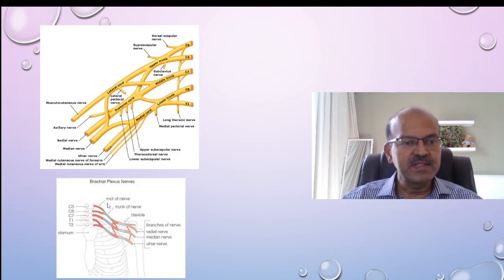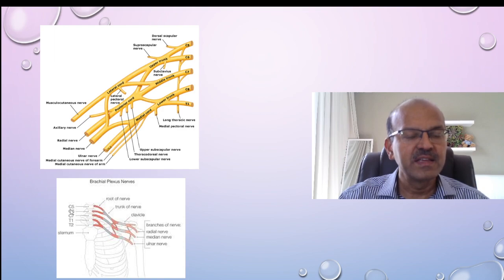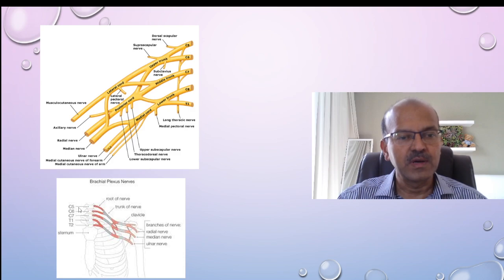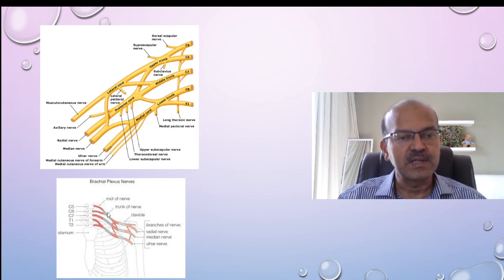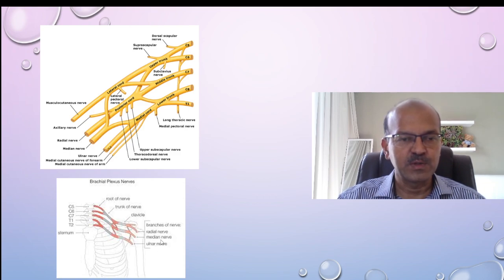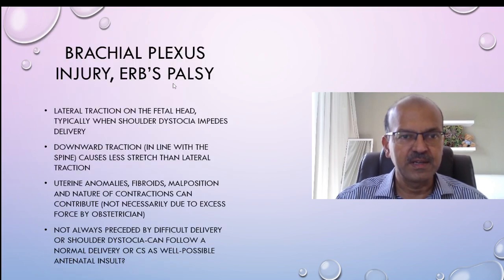So you can see here again we have C5, C6, C7, and T1 and T2 — usually it is C5 to T1 that is involved. We have the root of the nerve and then it divides into the trunk of the nerve and the branches of the nerve finally come out. The actual nerves are formed at this level while these are the nerve fibers which get mingled.